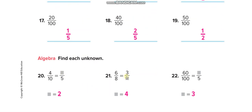Here you have to find the missing numbers. From the denominator, check how they got 5 from 10: 10 divided by 2 is 5, so 4 divided by 2 is 2 — so it will be 2 over 5.